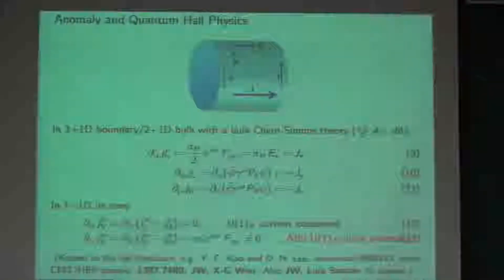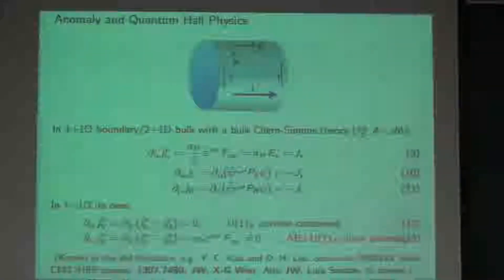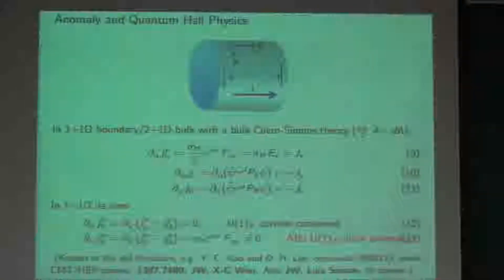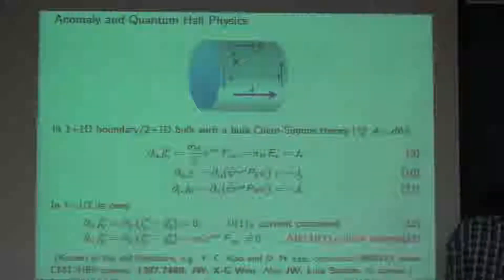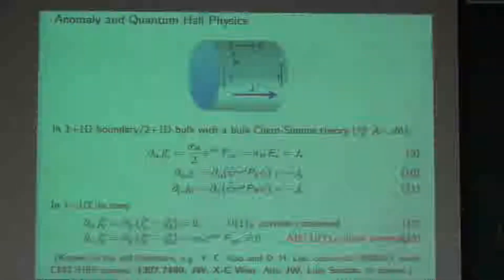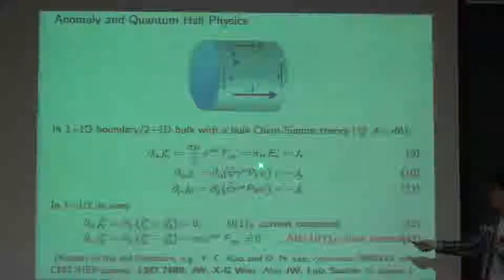The electric field can be induced by the Faraday effect — if you have a total magnetic flux change, you will have an induced E field winding around the loop. That is essentially the Laughlin thought experiment: you insert magnetic flux through the cylinder, just as magnetic flux through the annulus. Then by Faraday's law, dΦ/dt equals the loop integral of E·dl, inducing an electric field. The quantum Hall state drags current from one edge to the other edge.